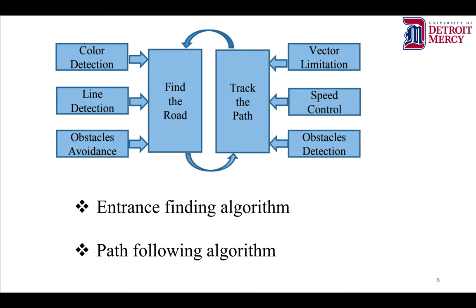The methodology covers finding and tracking the road. To find the road, we do color detection, light detection, and obstacle avoidance. To track the path, we do vector limitation, which means maintaining a proper distance from the yellow line, because our robot follows along the yellow line. We also do speed control and obstacle detection. Two algorithms were developed: the entrance finding algorithm and the path following algorithm.